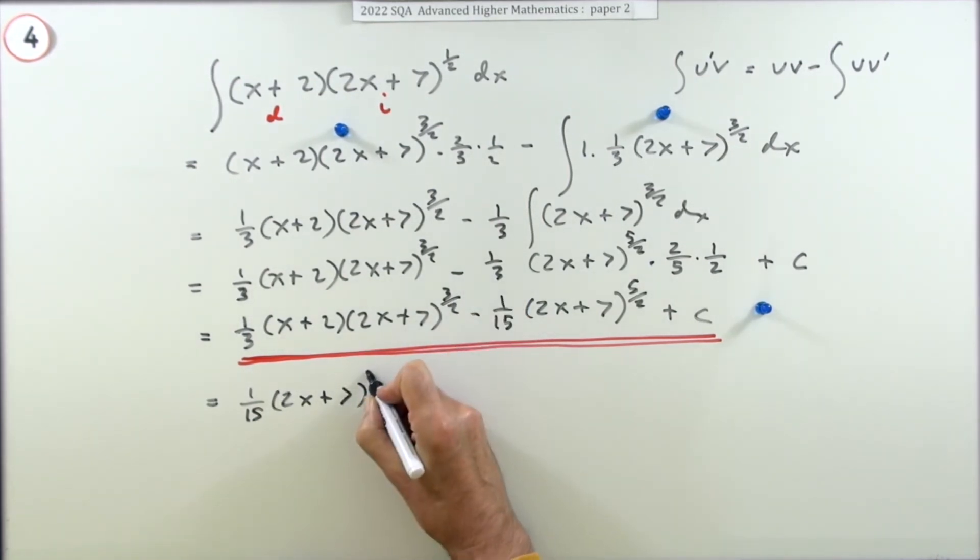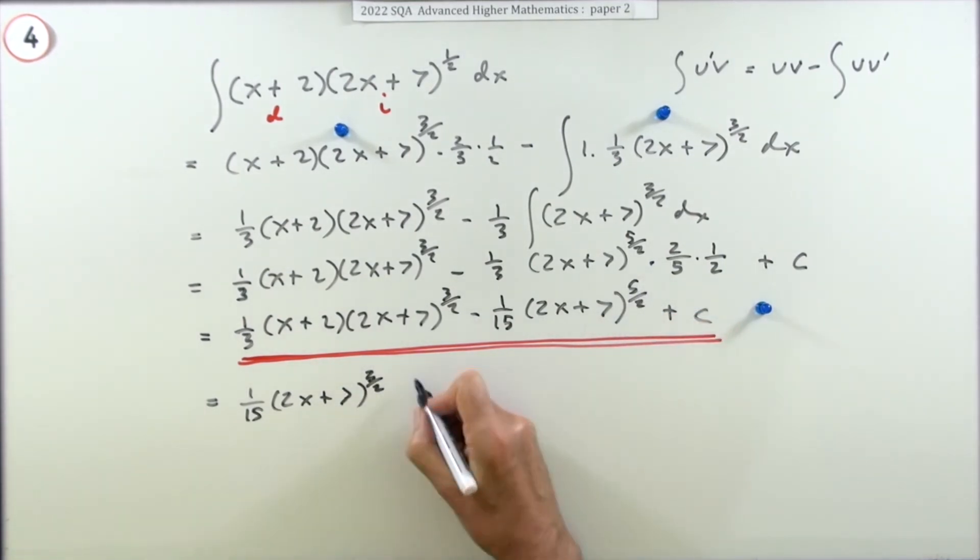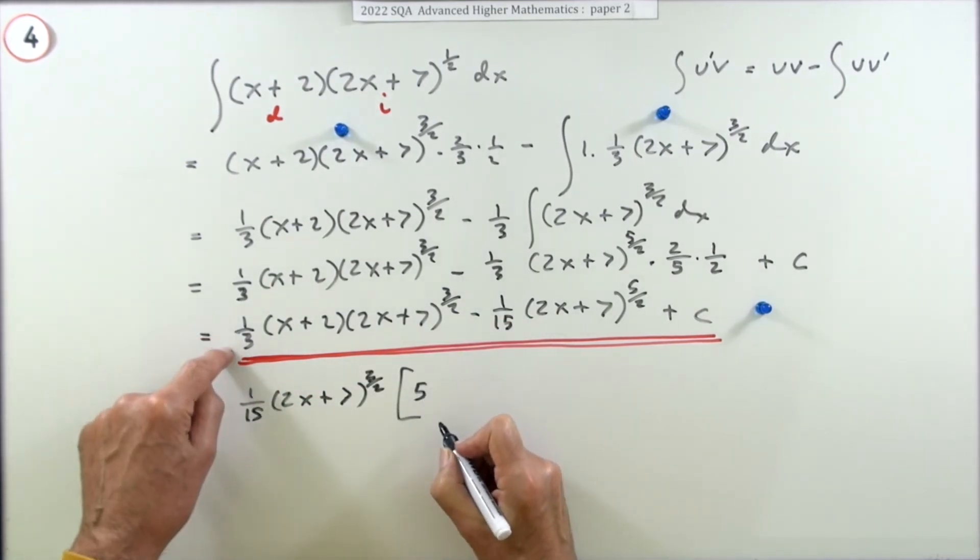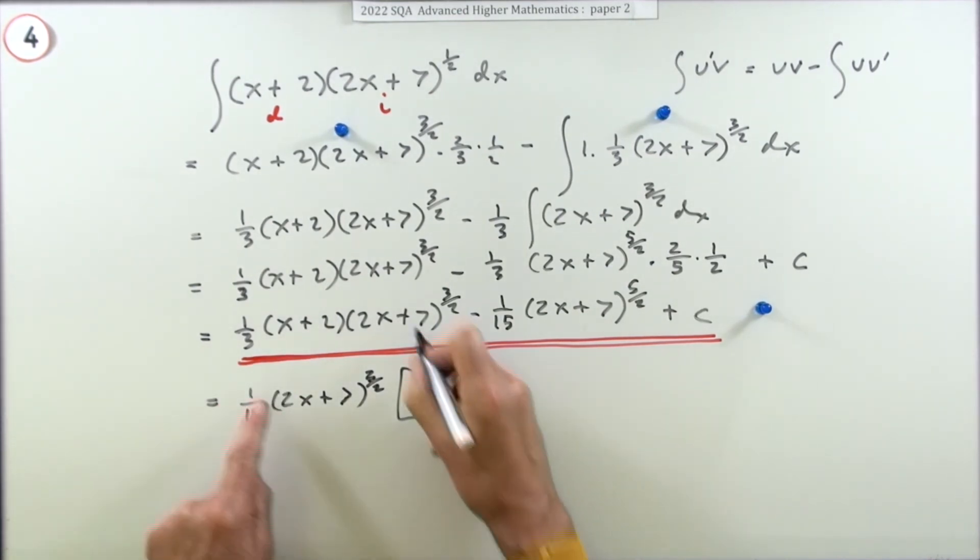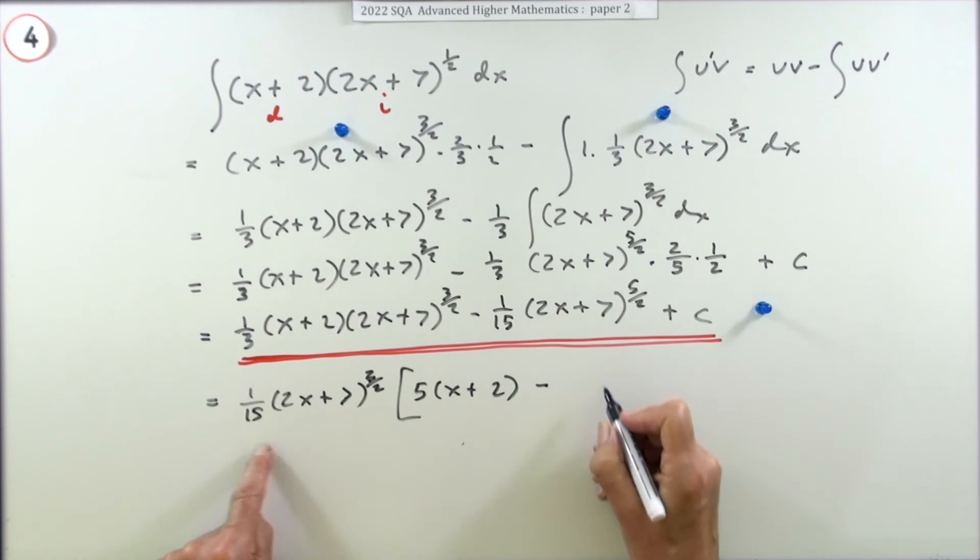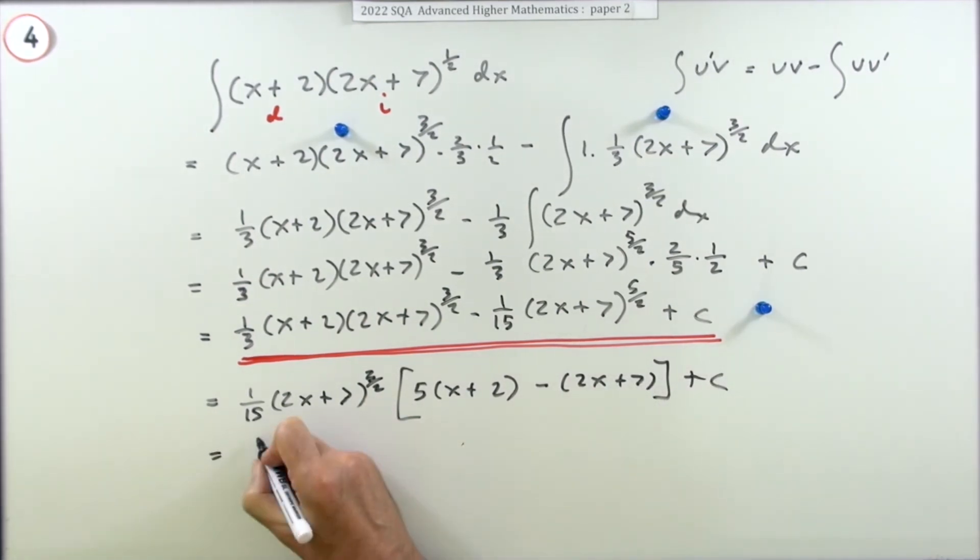Because I've got power 3 upon 2 there and I've got power 3 upon 2 lurking in here - that can come out. And that having come out, well I'll have to put a times 5 to reconstruct the third. That would just leave 5x plus 2. That's that first term complete. Minus, well that's okay the way it is, and that would just be 3 upon 2 plus 1 makes 5 upon 2. That would just be 2x plus 7 plus c.